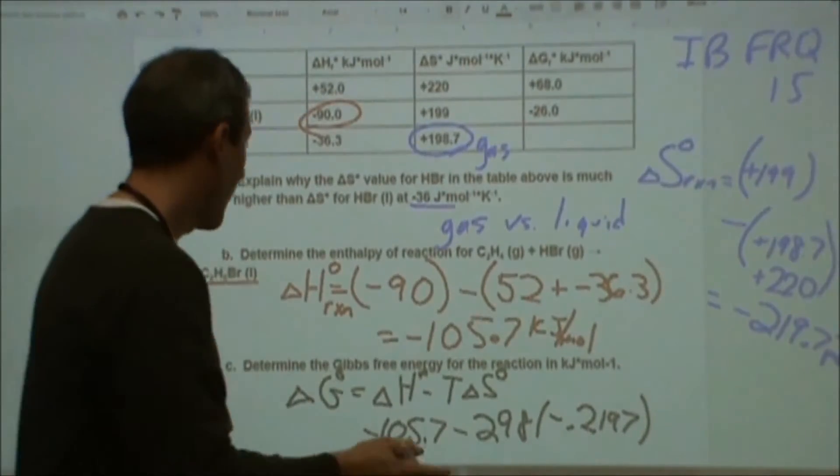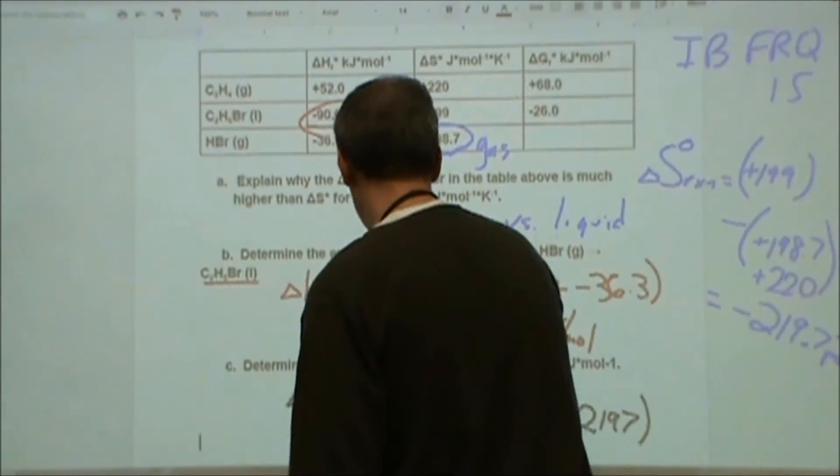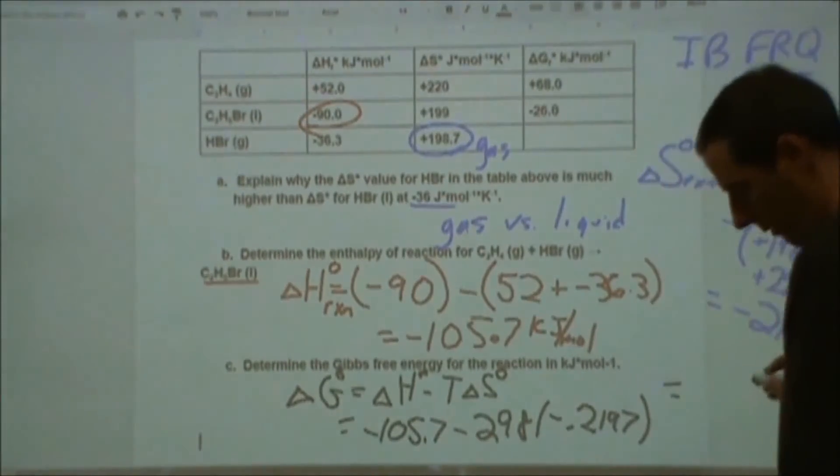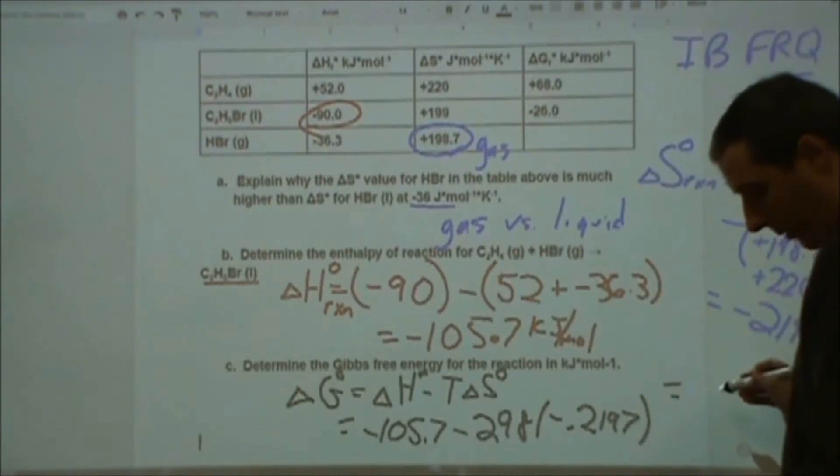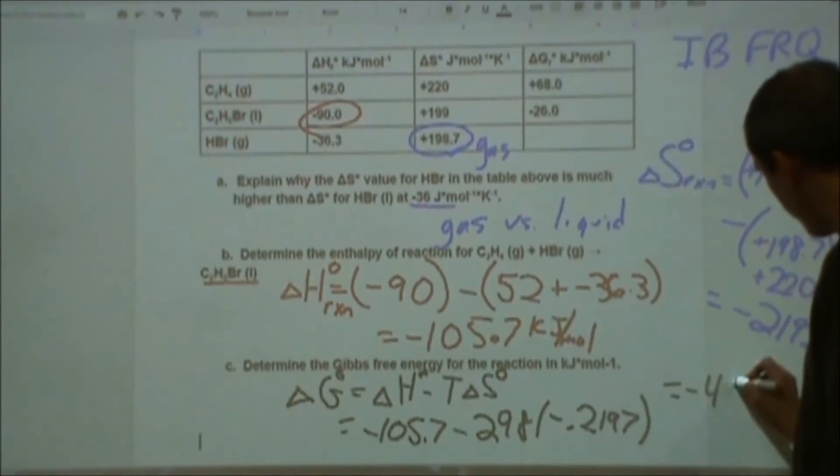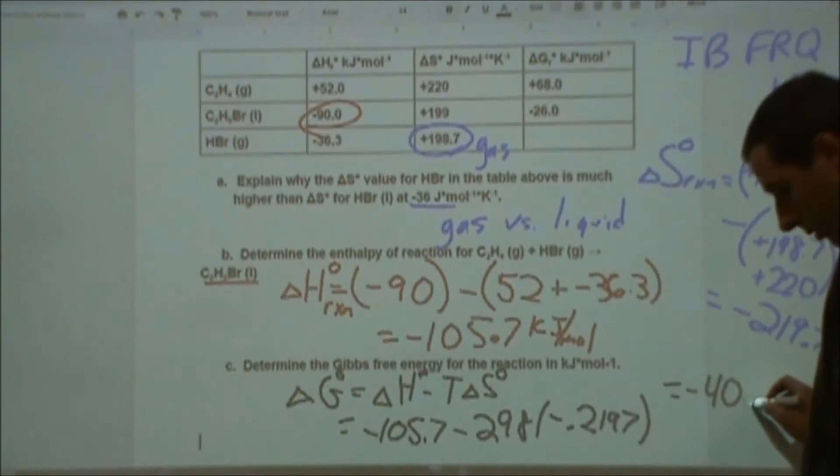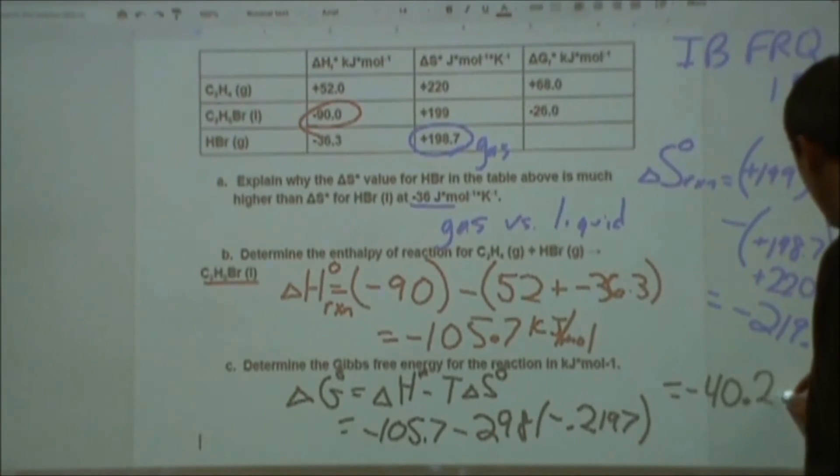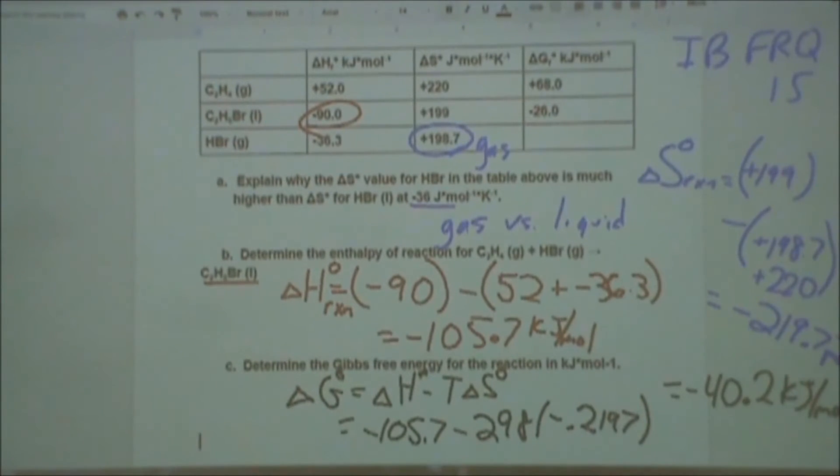And when we do that, we get a Gibbs free energy of, dramatic pause, negative 40.2. Yeah, that's right. Negative 40.2 kilojoules per mole.